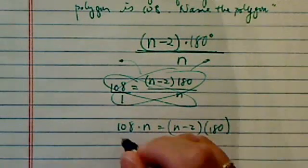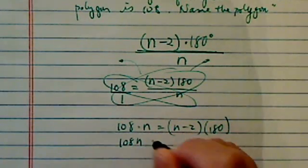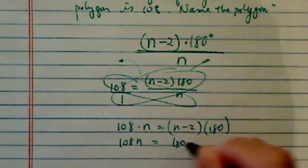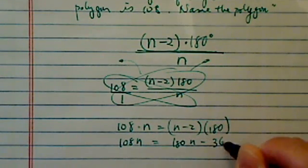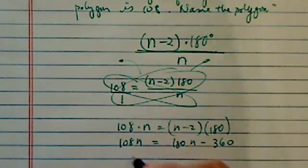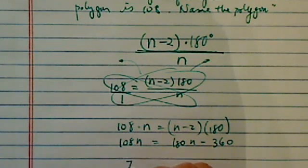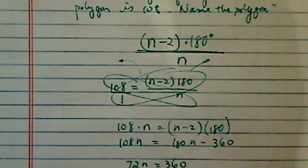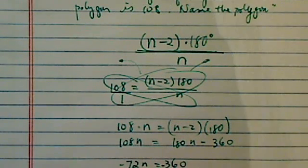From there, it's pretty easy. So 108n is equal to 180n minus 360. Let's subtract it over. So you have 72n equal to 360. So technically, it's minus minus, but one more step, it's 360.